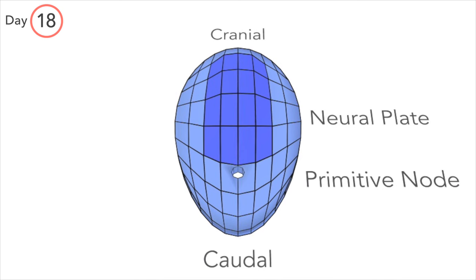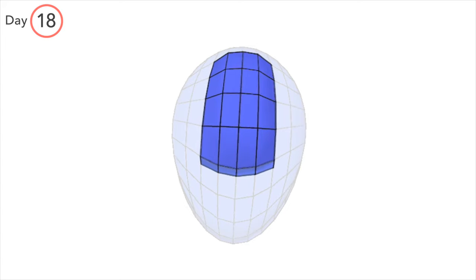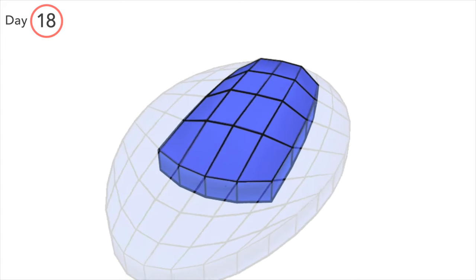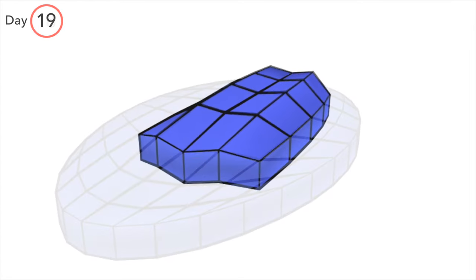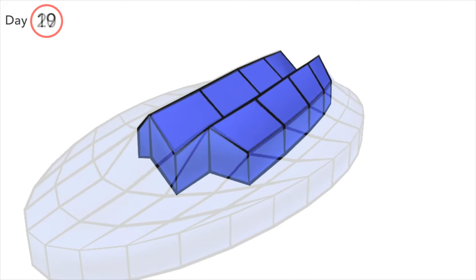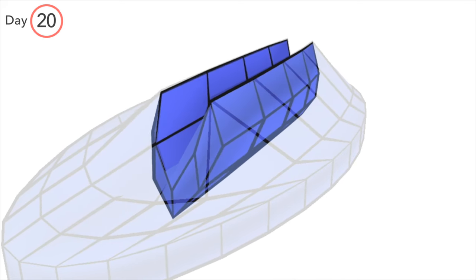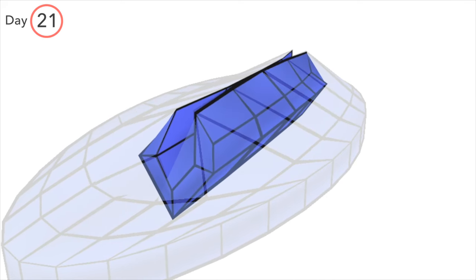Neurulation is the process of the neural plate becoming the neural tube. We've got a schematic animation here to try and illustrate that process. We'll break this down day by day throughout the rest of the video.